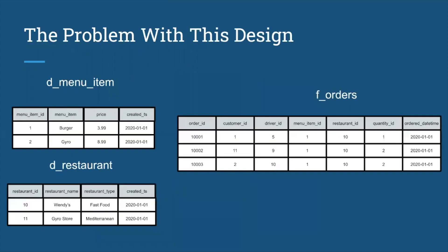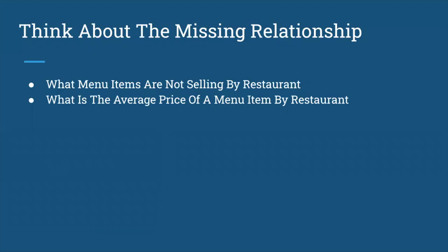If we look at this from a data level, specifically looking at menu items, restaurants, and orders — you can tell what menu item and what restaurant it came through by looking at the orders table. However, only one restaurant ID is in there, and really only one menu item. One issue is that the only way you can tell which restaurant is connected to which menu item is through the F orders table. That means if a menu item is never ordered, you'll never know it's connected to a particular restaurant — that's a huge miss, and you've lost that relationship information.